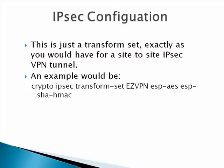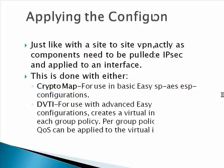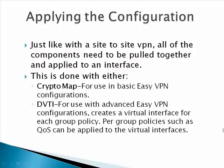The IPsec configuration is basically your transform set, exactly the same as you'd type for a site-to-site tunnel: 'crypto ipsec transform-set EasyVPN esp-aes esp-sha-hmac'. Hopefully most of the audience has set up a site-to-site tunnel before and is familiar with transform sets.